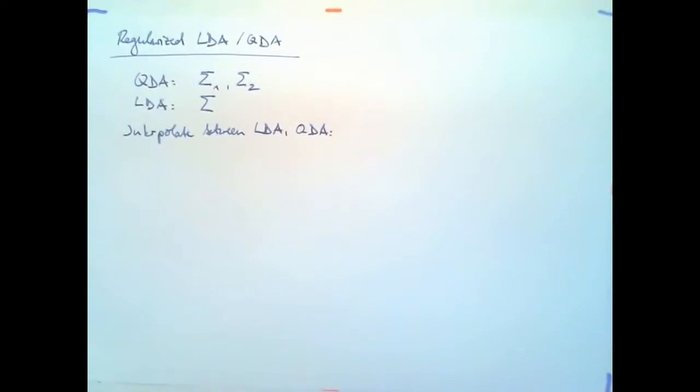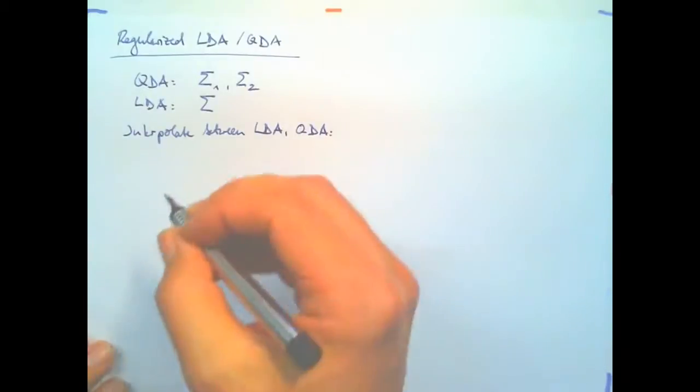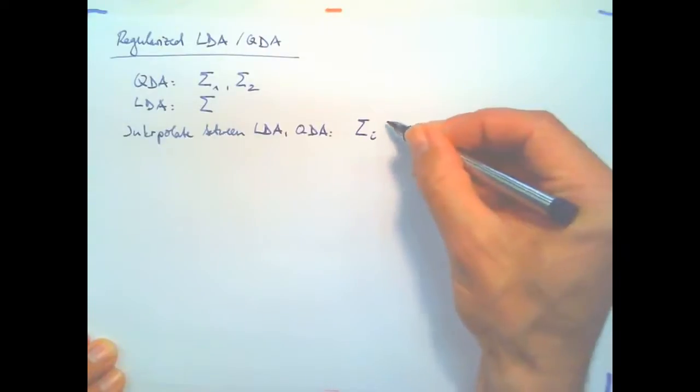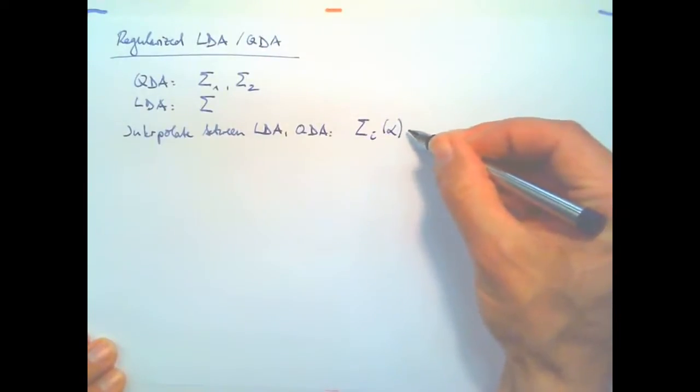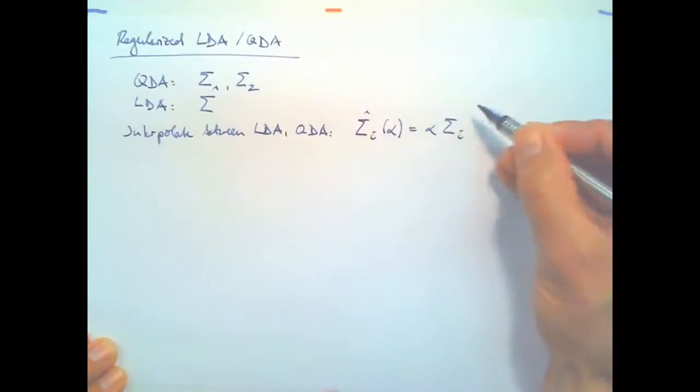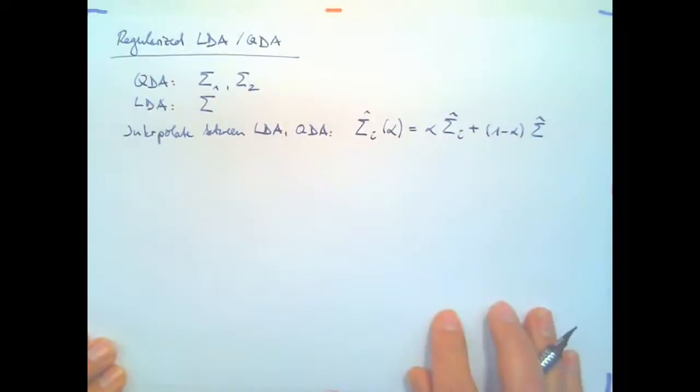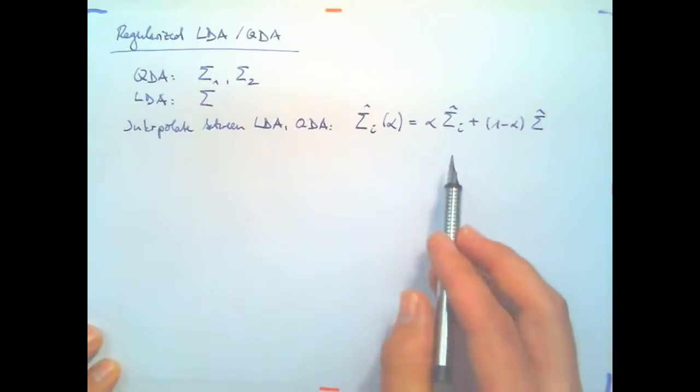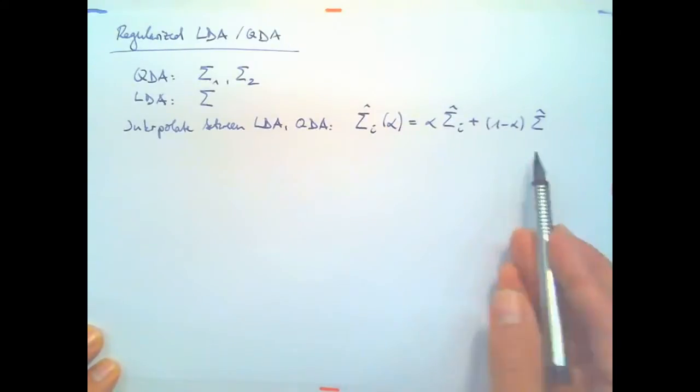Okay, so we can interpolate between the two as follows. By positing a sigma i, which now becomes a function of a parameter alpha. And now we take an admixture of the class covariance matrix that we estimated for the individual classes, plus 1 minus alpha times the pooled covariance matrix. So this will bring us from order of p squared parameters to order of p parameters.